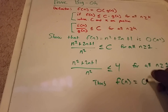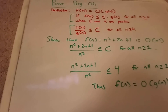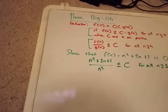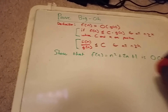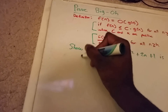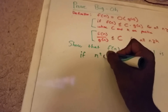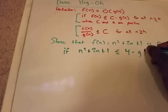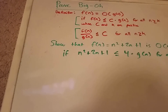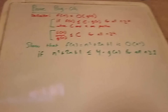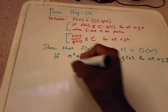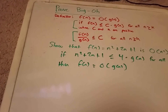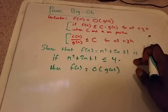Thus, f of n belongs to Big O of g of n. So f of n, which is n squared plus 2n plus 1, is less than or equal to our constant 4 times n squared, for all n greater than or equal to 1, then we know f of n belongs to Big O of g of n, where g of n is n squared.